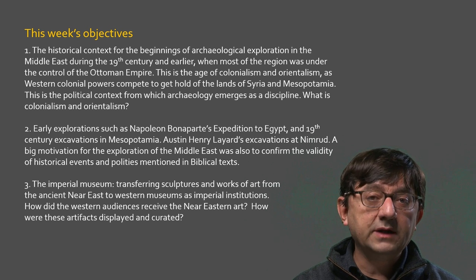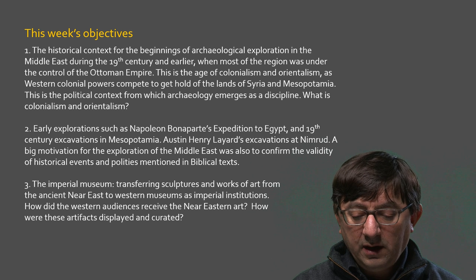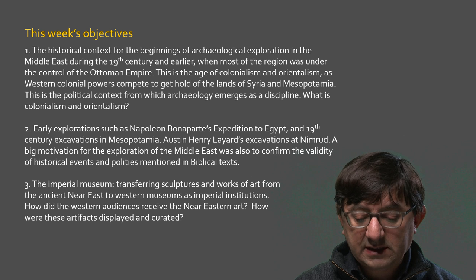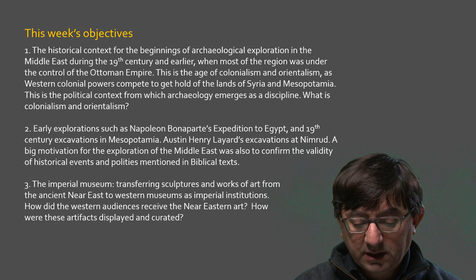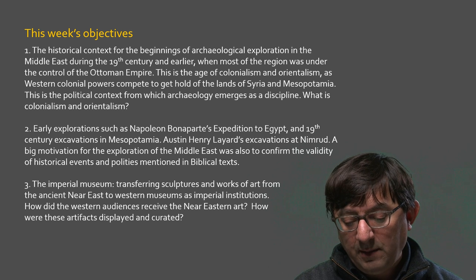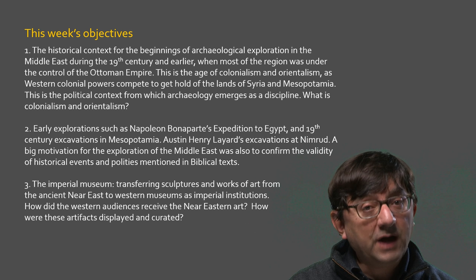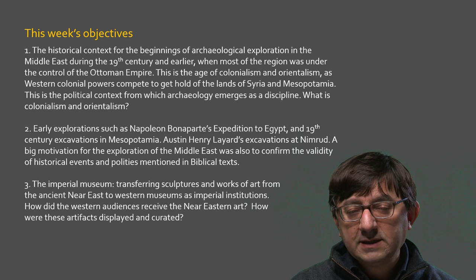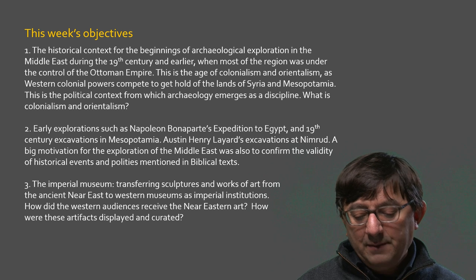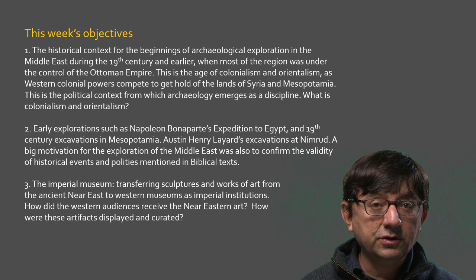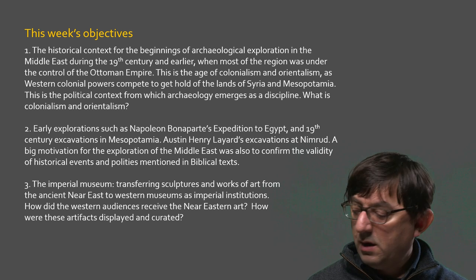The third objective is to look at the idea of the Imperial Museum. A lot of the sculpture, buildings, and artifacts excavated during 19th-century excavations in Iraq, Syria, and Turkey were shipped to Western museums and met European and American audiences for the first time. These audiences were trained in classical sculpture and classical art, and we're going to discuss how these objects were received, understood, and curated in these museum contexts.